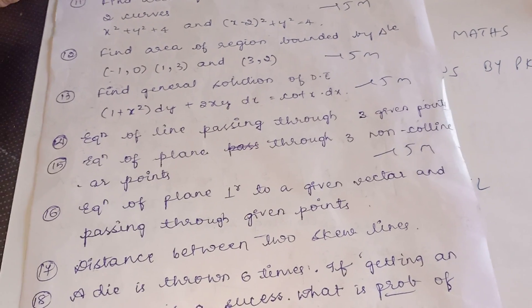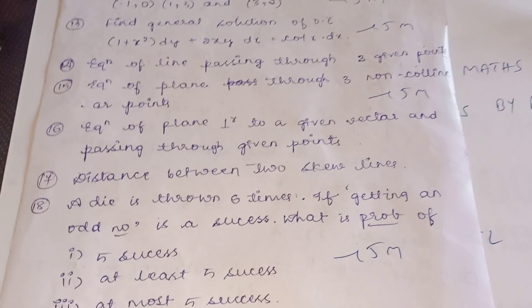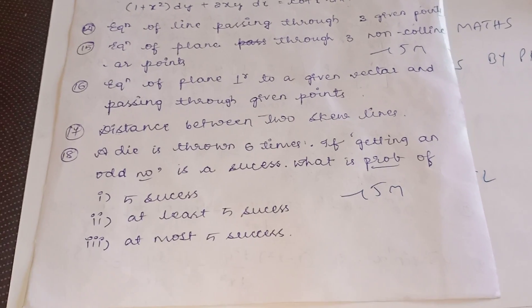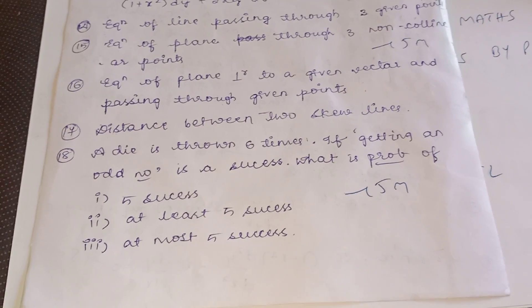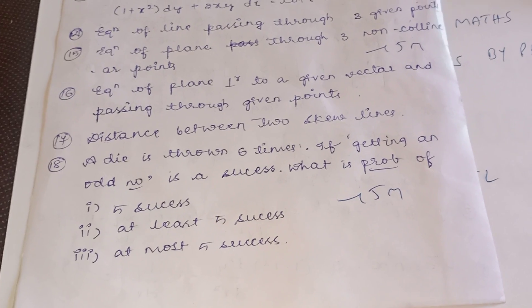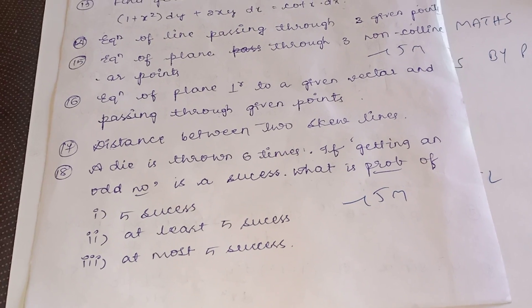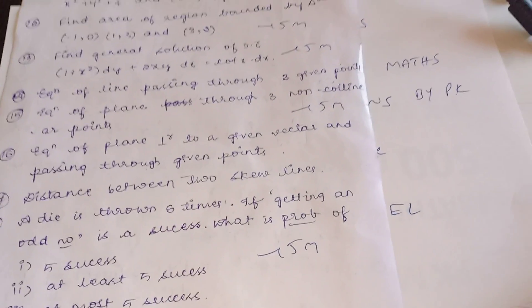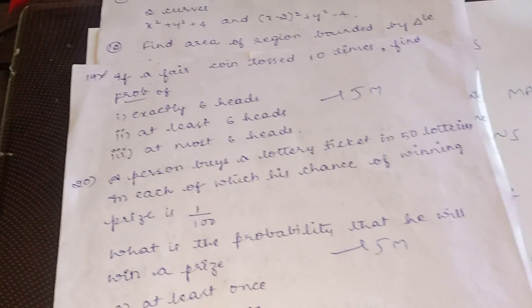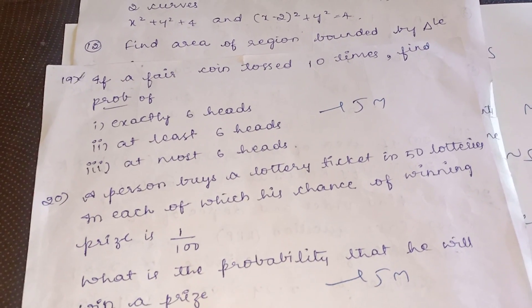If you come to probability, we have three important questions. Out of these three, one question will appear in the examination. That is: a die is thrown six times, of getting an odd number, at least five sixes, at most five sixes, that question.